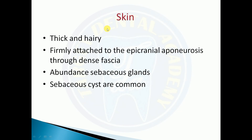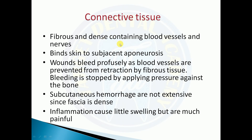The connective tissue layer is fibrous and dense, containing blood vessels and nerves. It binds the skin to the sub-adjacent aponeurosis. Wounds bleed profusely because blood vessels are prevented from retraction by the fibrous tissue, but bleeding is stopped by applying pressure against the bone. Subcutaneous hemorrhages are not extensive since the fascia is dense; however, inflammation causes little swelling but is very painful.